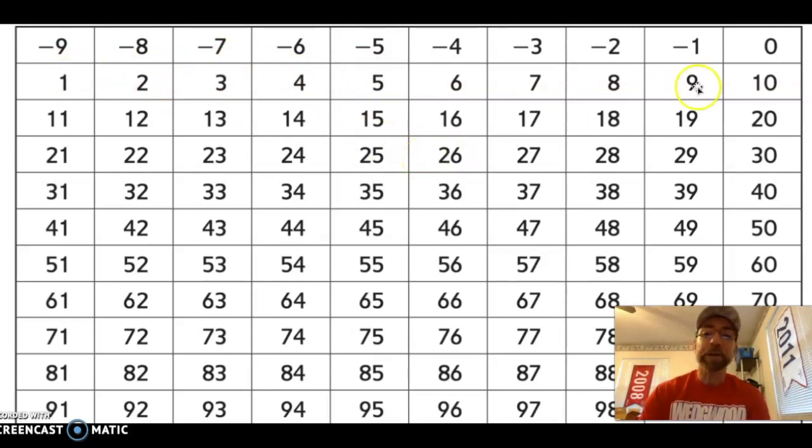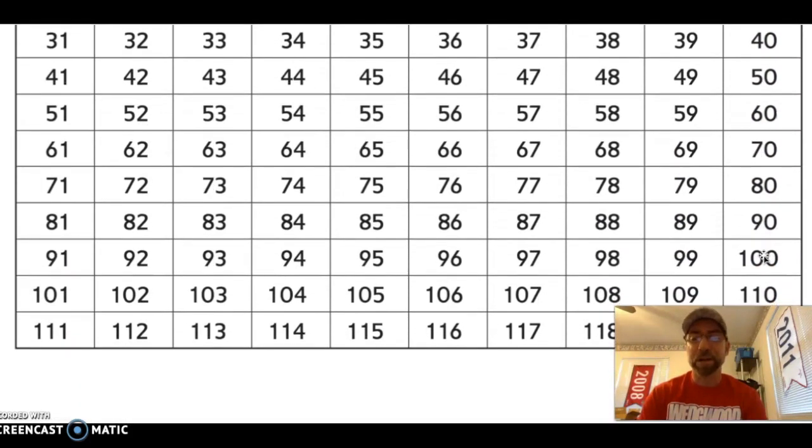And our number grid is also neat because since there are 10 numbers in a row, when I drop down, I count by tens. 10, 20, 30, 40, 50, 60, 70, 80, 90, 100.